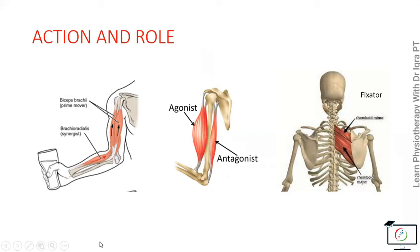The antagonist is the opposing muscle. The synergist is the muscle that helps the prime mover, while the fixator, as the name indicates, stabilizes the joint for the movement of the muscle.